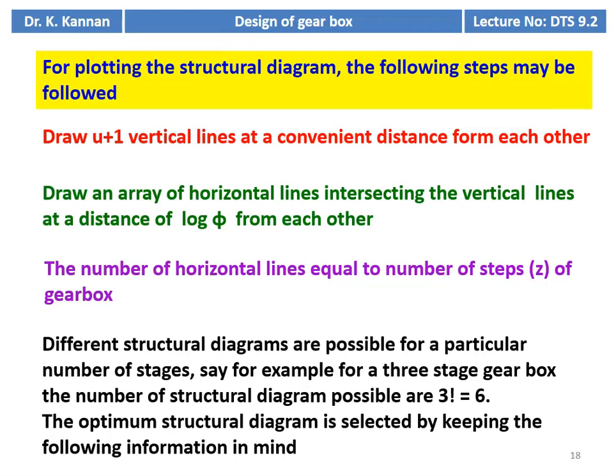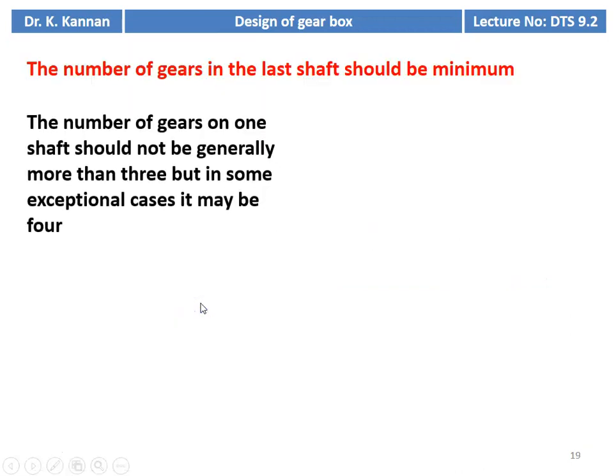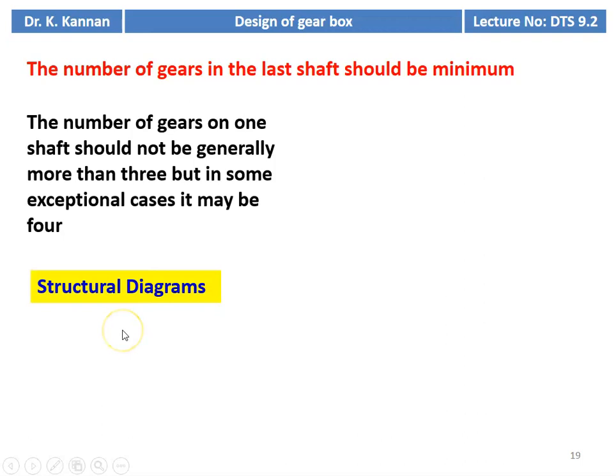The optimum structural diagram is selected by considering the following parameters: the number of gears on the last shaft should be minimum. In a three-stage gearbox, the number of gears on the third shaft should be minimum. The number of gears on one shaft should generally not exceed three; in exceptional cases, four — but not more than four, because a higher number of gears increases the bending force on the shaft, complicating shaft design or requiring a larger shaft.